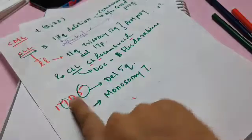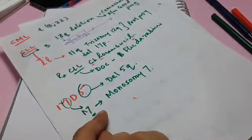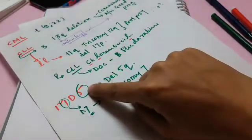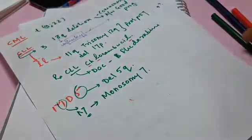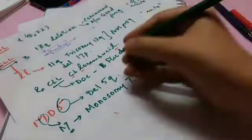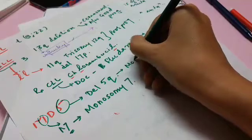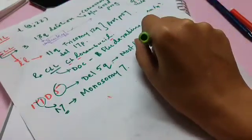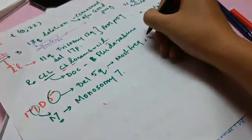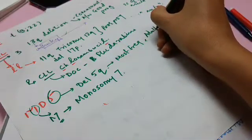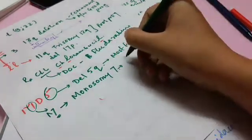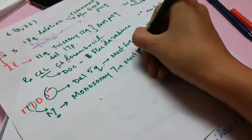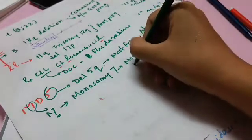and this S will remind you of deletion 5Q. So M will remind you of monosomy 7, and this S will remind you of deletion 5Q. Deletion 5Q is the most frequent change, and it is also the change in adults, and monosomy 7 is the most frequent in children.